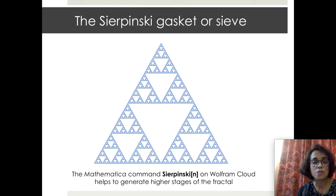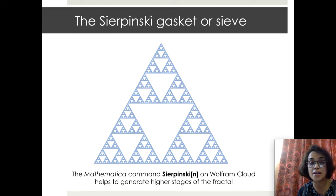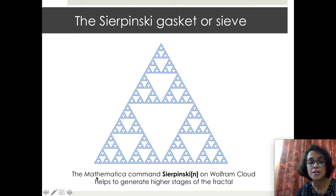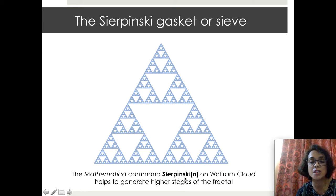The Sierpinski triangle is also known as the Sierpinski gasket or Sierpinski sieve. If you want to explore higher stages and generate them, you would need a very evolved computer program. However, the mathematical command 'Sierpinski[n]' on Wolfram Cloud helps to generate higher stages. For example, to generate stage six of the Sierpinski triangle you would type the command 'Sierpinski[6]' in Wolfram Cloud and you would get that beautiful fractal.